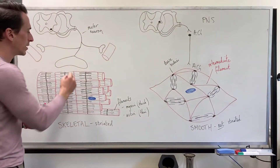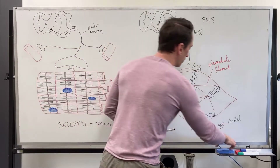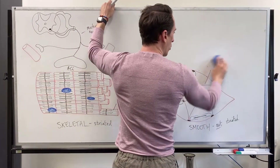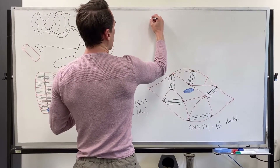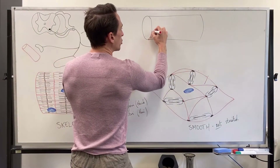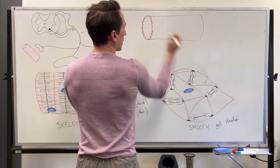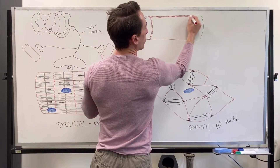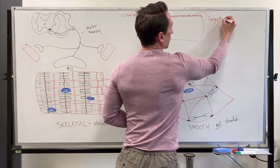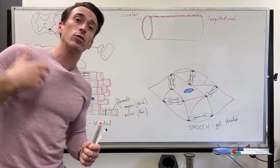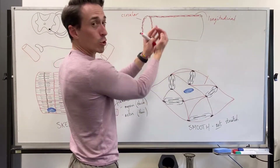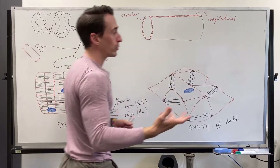Here's a big difference when we look at smooth muscle arrangement. It lines hollow organs — that's really important. In something like the intestines (a tube), smooth muscle is arranged in multiple orientations. For example, circular smooth muscle wraps around the tube, and longitudinal smooth muscle runs along its length. The whole point is to narrow the diameter and shorten the length of the tube, which pushes things through — this is called peristalsis.